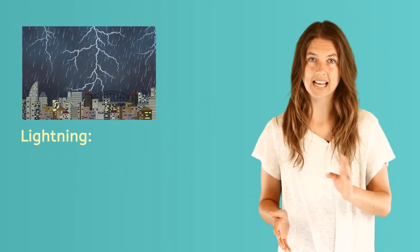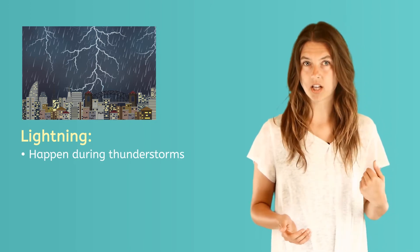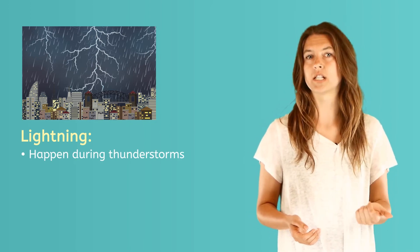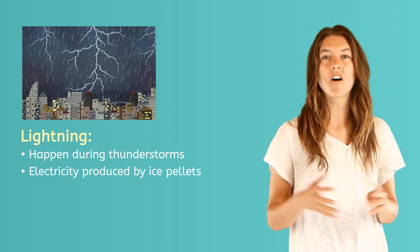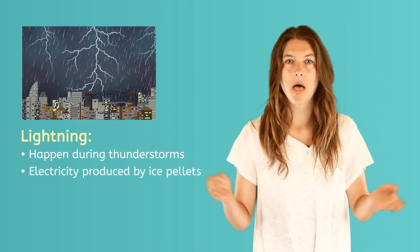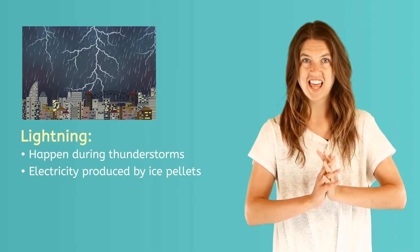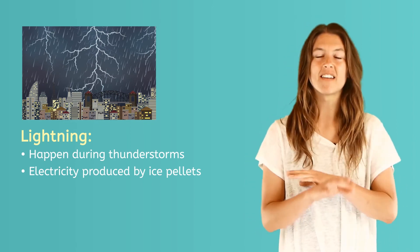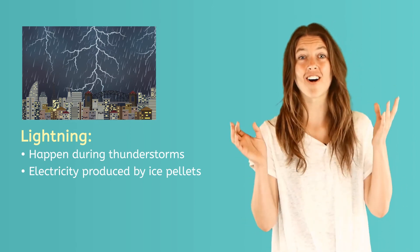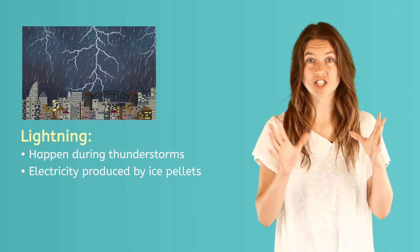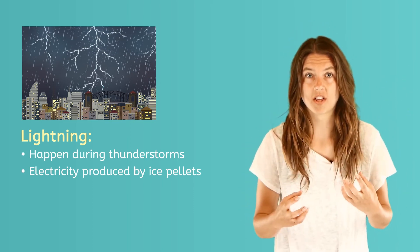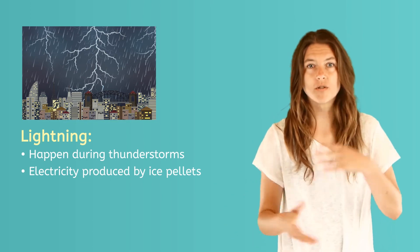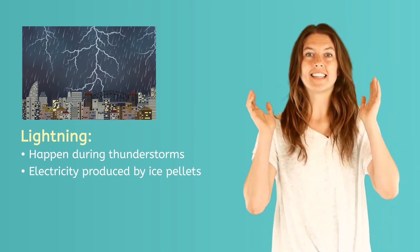Thunderstorms and lightning go hand in hand. Lightning happens during every thunderstorm — you cannot have thunder without lightning. Lightning is electricity produced by all those ice pellets in the sky that bump into each other. They create electrical charges that eventually fill up the entire cloud. Then that cloud charge connects with a huge charge on the Earth, like trees or the ground, and then zap — lightning strikes!